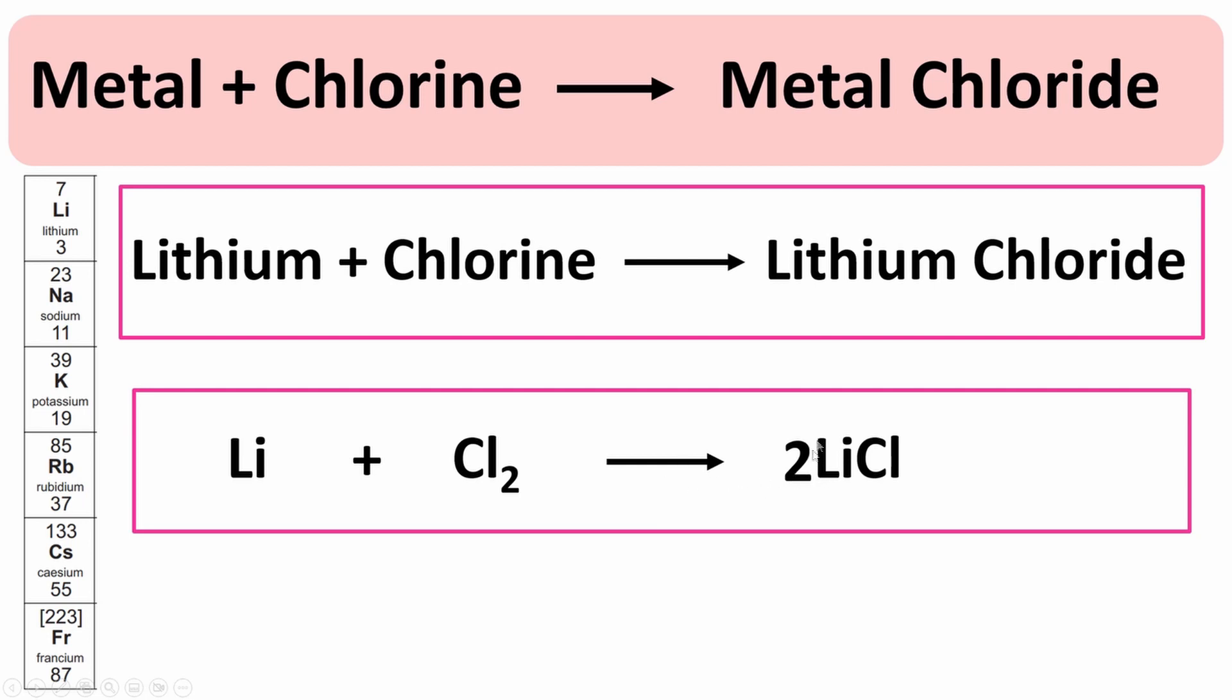However, now this two also applies to everything that comes after it, so it also applies to lithium as well. So we've got two lithiums now on this side, but only one there, so we put a two there. So now this is our balanced symbol equation for the reaction between lithium and chlorine.